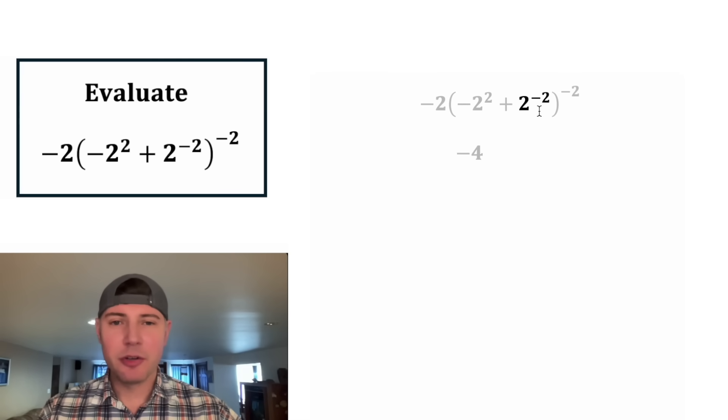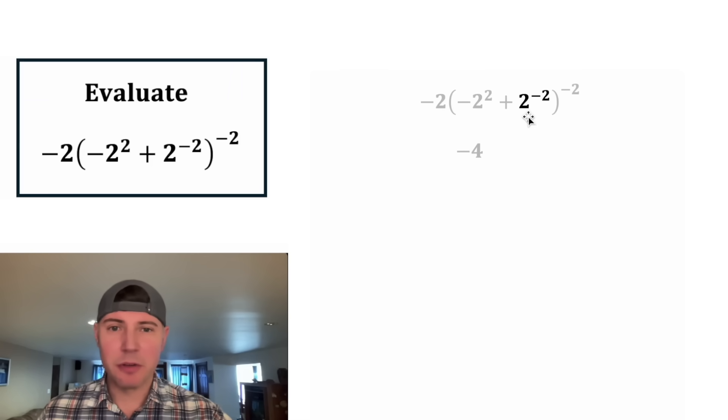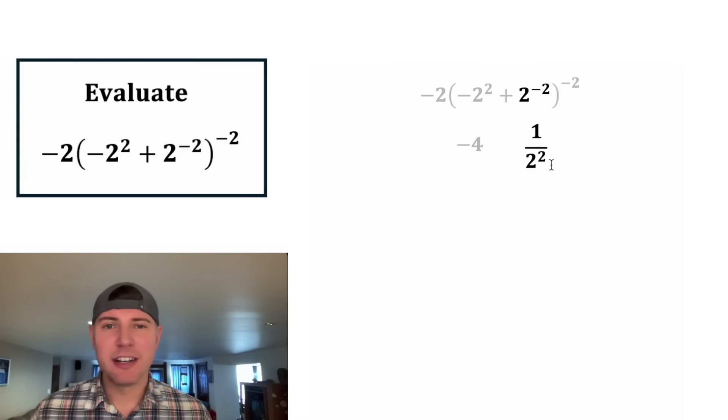And then for this term, two to the negative two, a negative exponent puts this in the denominator. Two to the negative two is the same thing as one over two squared. Here are the notes for that.